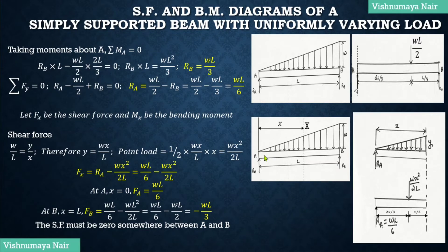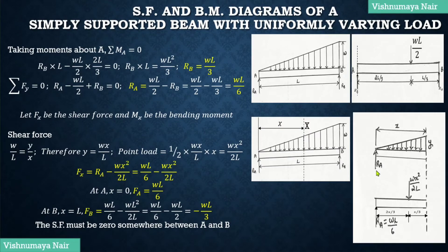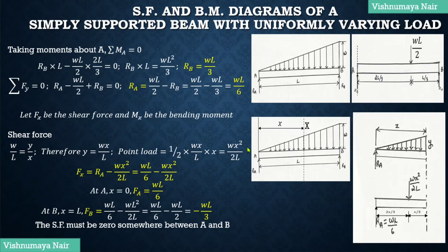Let's now find out the shear force and bending moment values along the length of this beam. We have to consider a section at a distance of x meters from end A. Let Fx be the shear force and Mx be the bending moment at this section. On the left portion, we have reaction force Ra acting upward and a uniformly varying load spread over a distance of x meters. Before converting this load to a point load, we find Y by comparing similar triangles: W/L equals Y/X, so Y equals WX/L. Therefore the point load equals the area of this triangle: half times WX/L times X, which equals WX²/2L, acting at the CG of this triangle — at a distance of X/3 from the section and 2X/3 from end A.